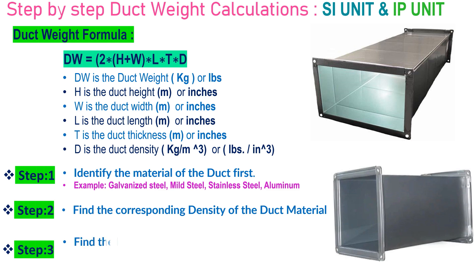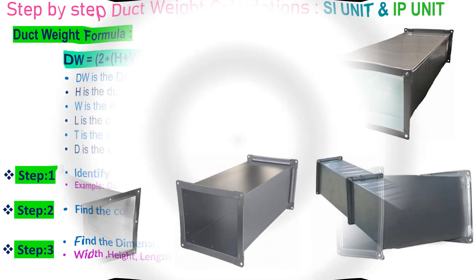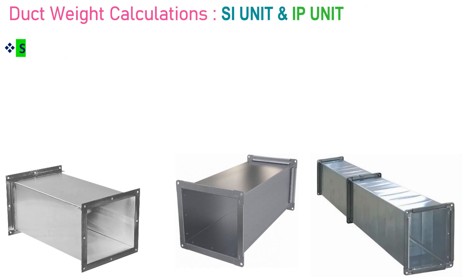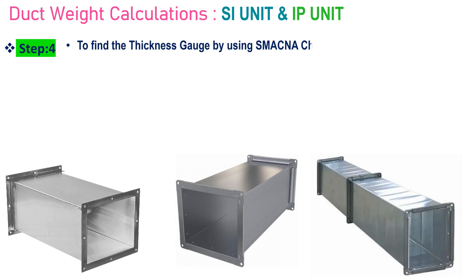Step 3: Find the dimensions of the duct — width, height, and length. Step 4: Define the thickness gauge by using the SMACNA chart, selecting the inches corresponding to the duct size and pressure class.